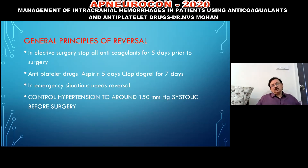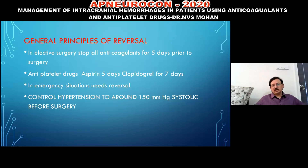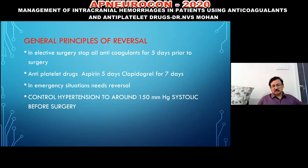General principles of reversal: For elective surgery, stop anticoagulants five to seven days prior. For high-risk cases, provide bridging with low molecular weight heparin, stopped 12 hours before surgery. For antiplatelet drugs: aspirin can be stopped five days before surgery; clopidogrel should be stopped seven days before surgery. In emergency situations, these drugs must be reversed. Control hypertension to around 150 mmHg before surgery.